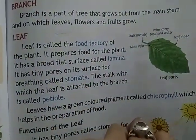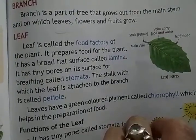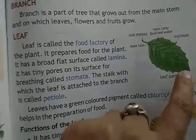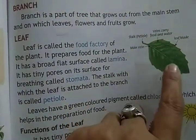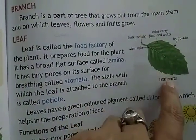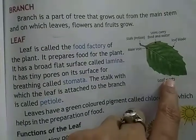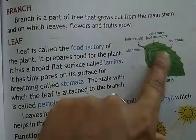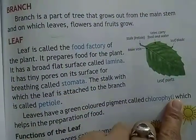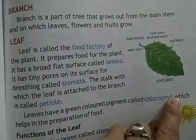Leaf is a food factory — that is what we call it, because the plant prepares its food using the leaf. This broad flat surface is called lamina.